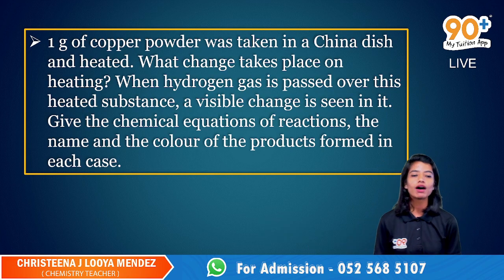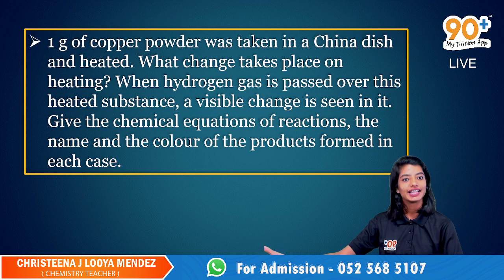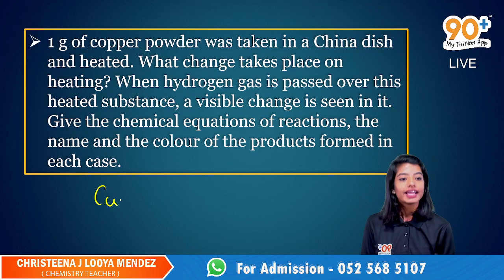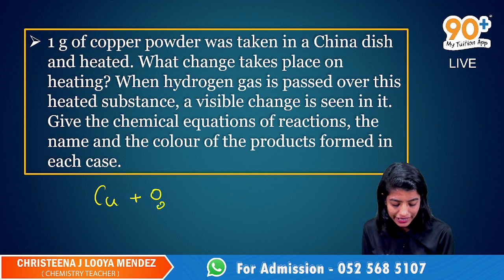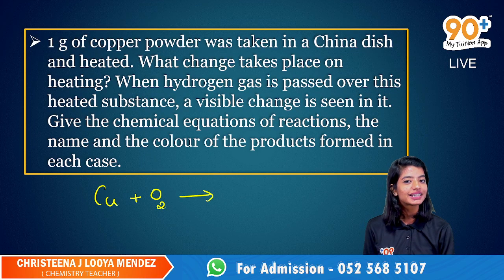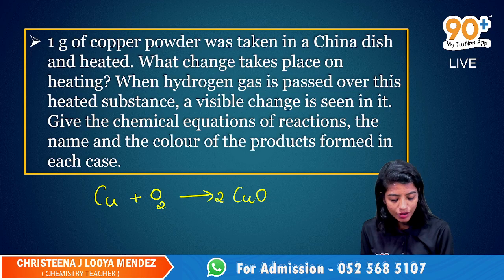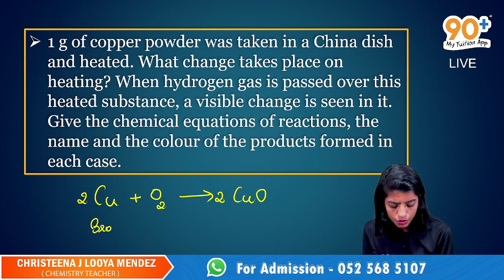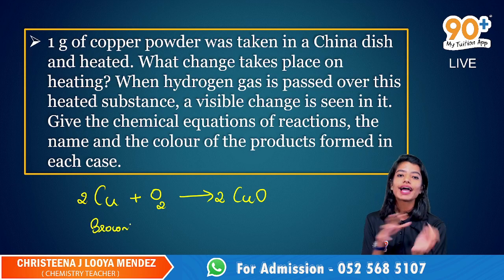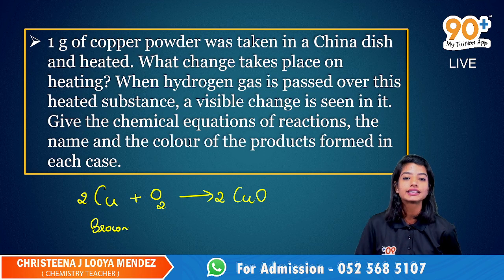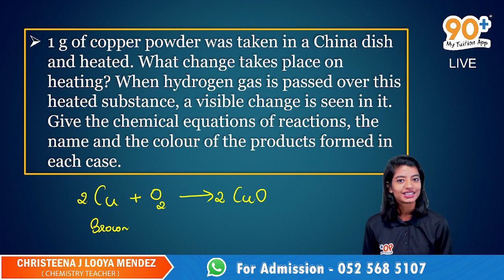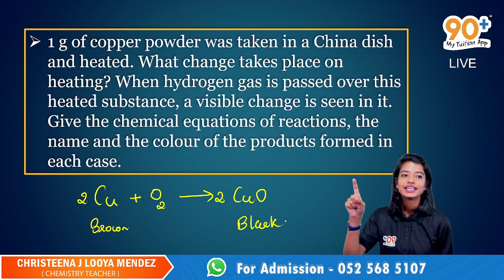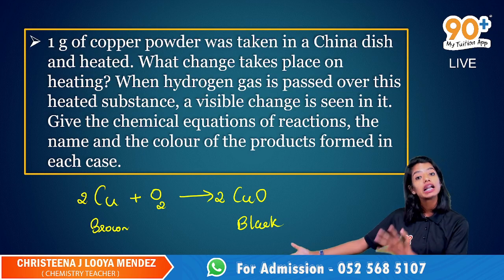One gram of copper powder was taken in a china dish, and we heated it. What changes take place on heating? When we heat copper powder, it will react with oxygen present in the air, and the product is copper oxide. We know the color of copper was almost a reddish-brown. When it reacted with oxygen, it underwent oxidation — addition of oxygen — and copper oxide turned black in color. So the change taking place on heating is a color change.